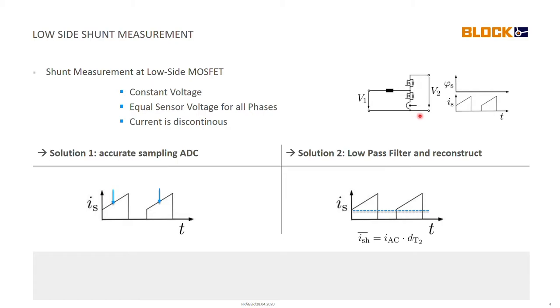So the big advantage of this position is that we have constant voltage at the sensor. You can see it here on the right-hand side, the voltage at the sensor is always constant and it's directly connected to the negative DC voltage. It's the same for the three phases so we can also just connect the digital ground of the microcontroller to it and we just get rid of our isolation problems.